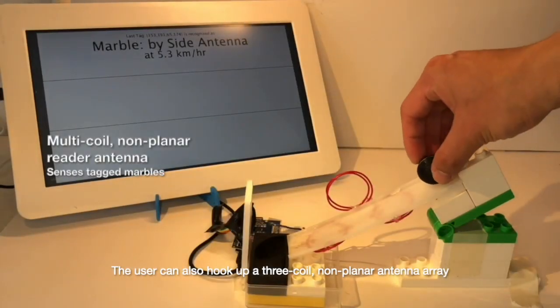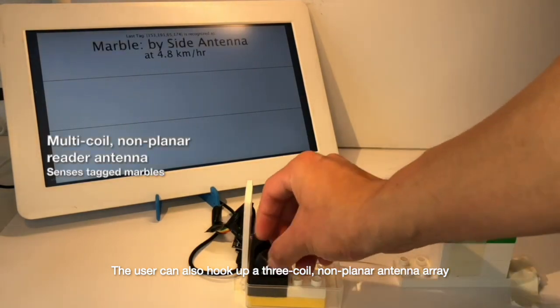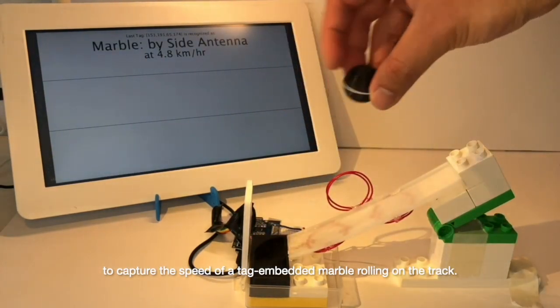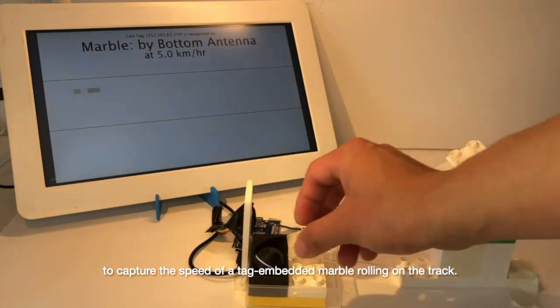The user can also hook up a three-coil non-planar antenna array to capture the speed of a tag-embedded marble rolling on the track.